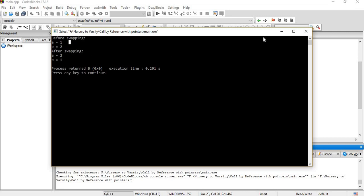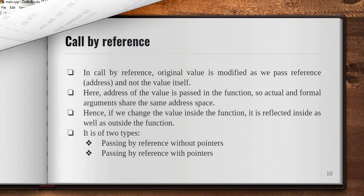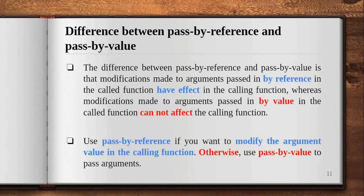That's all for today's topic — functions and swapping two numbers using a third variable. You might be confused by pass by reference and pass by value, so let's see some differences. Modifications made to arguments passed by reference in the called function have effect in the calling function, whereas modifications made to arguments passed by value cannot affect the calling function — in call by value we passed a copy, not the original values. If you want to modify the argument in the calling function also, use pass by reference; otherwise use pass by value.